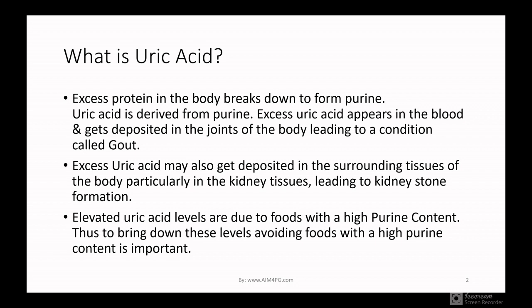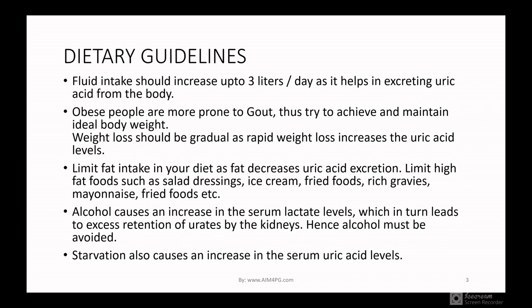Let's understand what uric acid is. Excess protein in the body breaks down from purine, and uric acid is derived from purine. Excess uric acid appears in the blood and gets deposited in the joints of the body, leading to a condition called gout. Excess uric acid may also get deposited in surrounding tissues, particularly in the kidney tissues, leading to kidney stone formation. Elevated uric acid levels are due to food with a high purine content, so to bring down these levels, avoid food with high purine content.